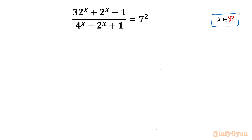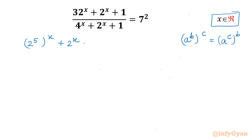I will begin this video by writing one powerful exponent property: (a^b)^c can be written as (a^c)^b. Now I can write 32 as 2^5, so the numerator becomes (2^5)^x + 2^x + 1, and the denominator 4^x becomes (2^2)^x, giving us (2^2)^x + 2^x + 1, and the right-hand side is 49.